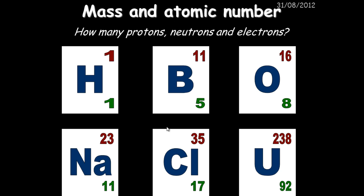Chlorine: thirty-five minus seventeen gives us eighteen neutrons. Uranium, or U in this case, has ninety-two protons, ninety-two electrons and it has a hundred and forty-six neutrons.